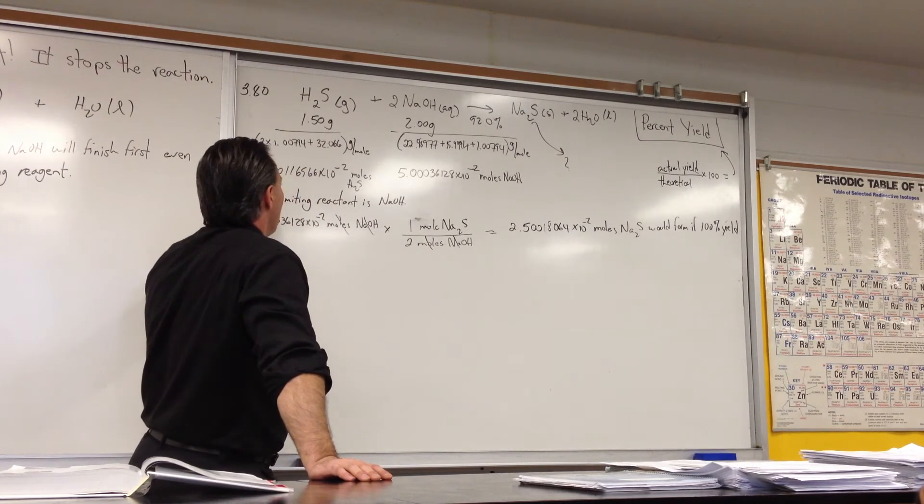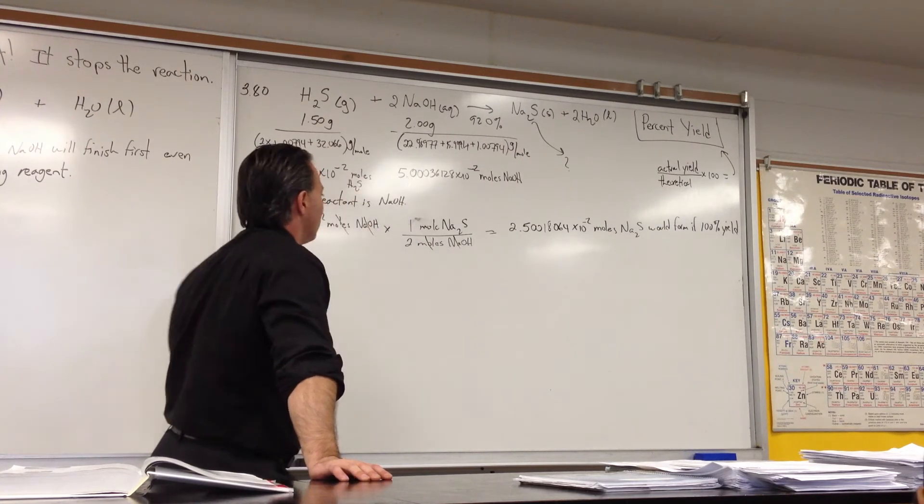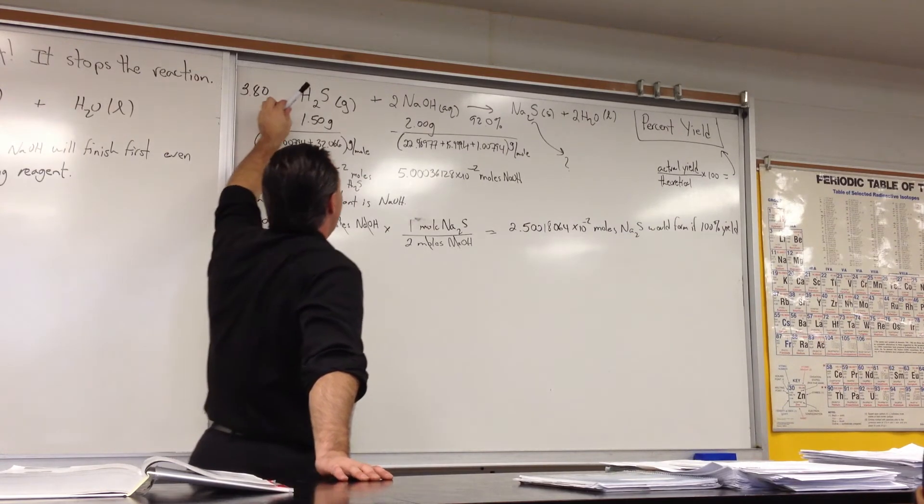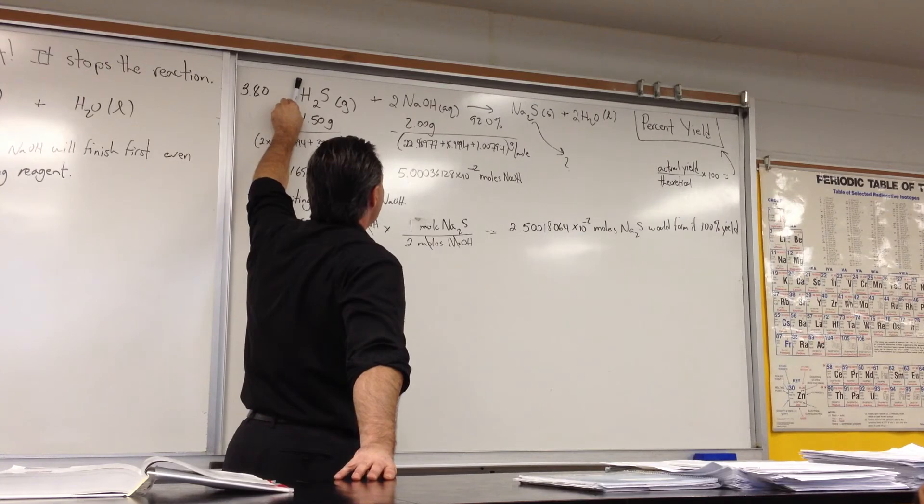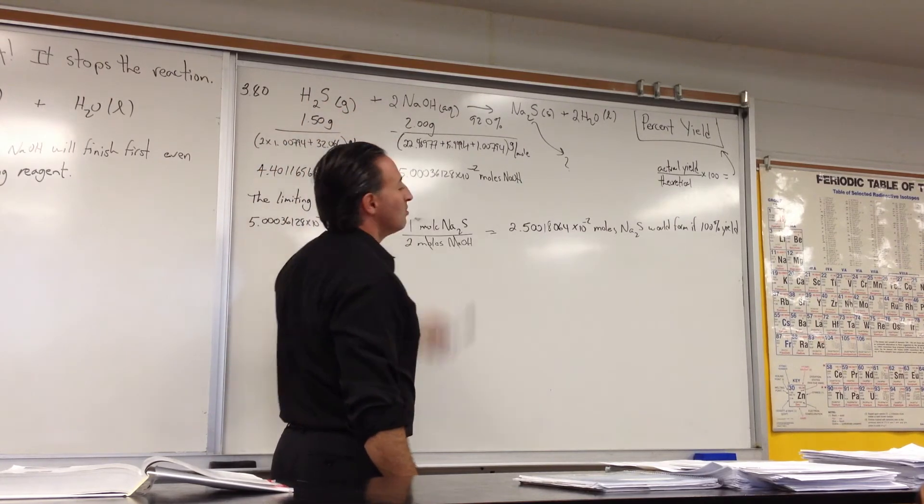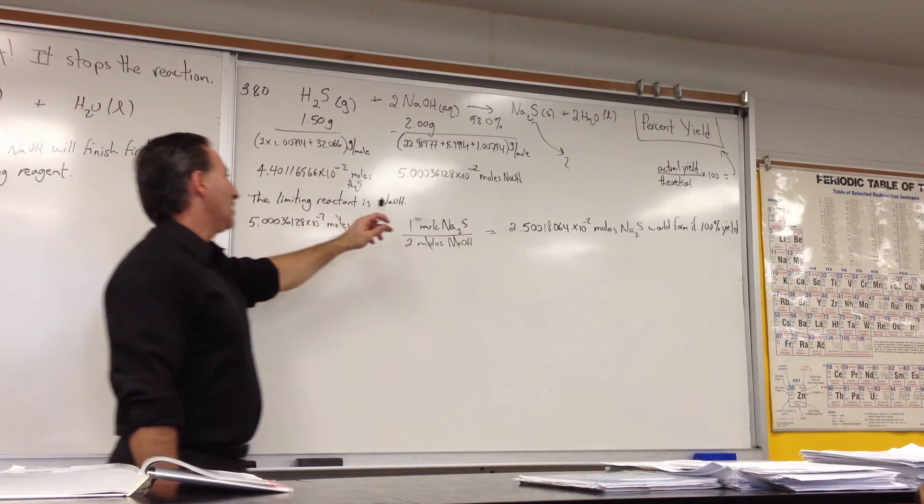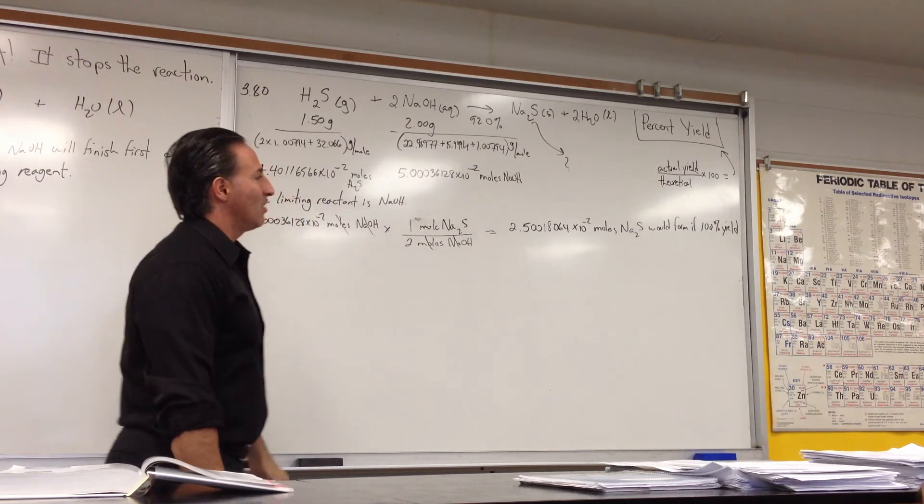So it looks like you have an excess of sodium hydroxide, because you have 0.04 moles of H2S and 0.05 moles of NaOH. But again, this stoichiometry has to be taken into account. For every 1 mole of hydrogen sulfide, you need to have 2 moles of sodium hydroxide. So in fact, the limiting reagent in this reaction is, again, sodium hydroxide, even though it appears to be in excess.